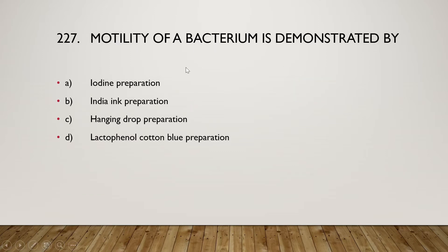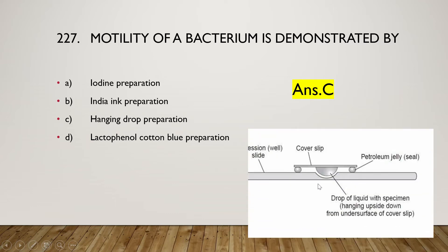Next question: motility of a bacterium is demonstrated by iodine preparation, India ink preparation, hanging drop preparation, or lactophenol cotton blue preparation? The right answer is option C — hanging drop preparation. In the hanging drop method, a glass slide with a curved well is used. A drop of liquid specimen is placed on a cover slip, which is then inverted onto petroleum jelly, and the bacteria are observed under a microscope to assess motility.